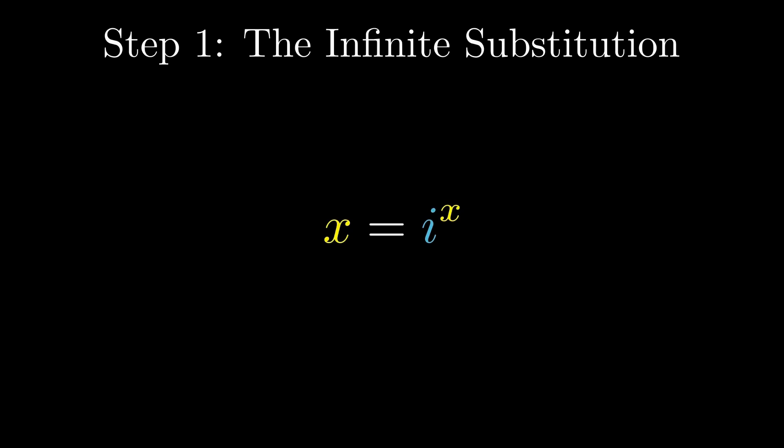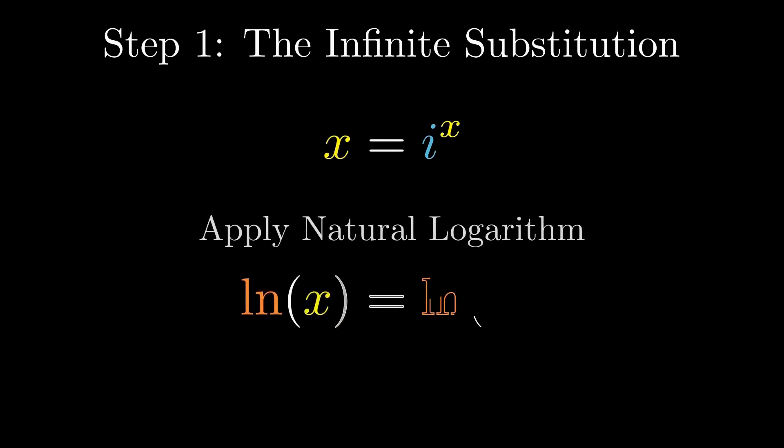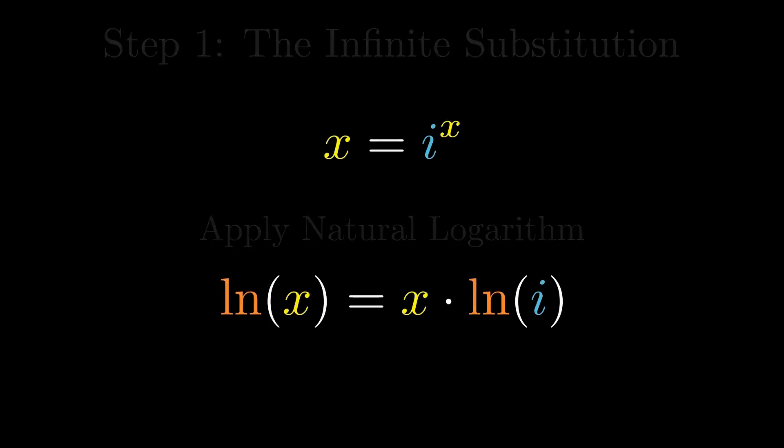X equals i to the power of X. Now we apply the natural logarithm. This transforms the equation into a simpler form. The natural log of X equals X times the natural log of i. We now repeat the same step for